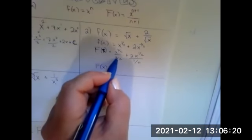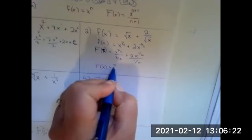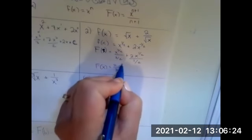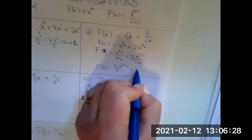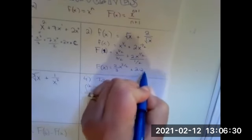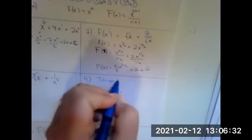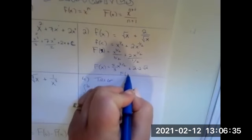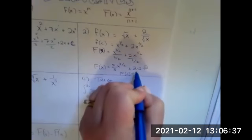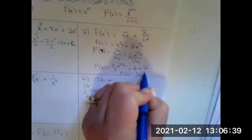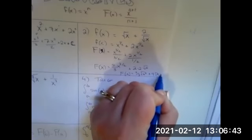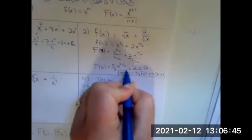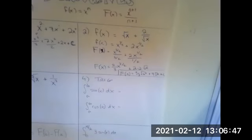Division by three halves is the same as multiplying by two thirds. So we get two thirds times X to the three over two, plus division by one half gives two times two square root of X. So F of X can be written as two thirds times the square root of X to the third plus four square root of X plus C. We'll always have to think about that C.